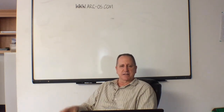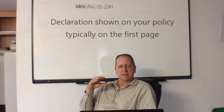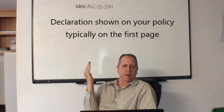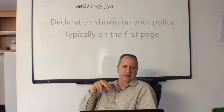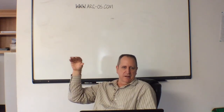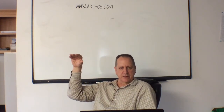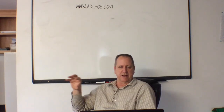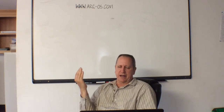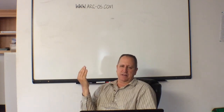The first thing I wanted to talk about in your policy is called the declaration page. This is the front of your policy and it has all the limits on it. For instance, it'll say 'building' — house or business — and it'll have a dollar amount. All these dollar amounts listed on it are what are called coverages.